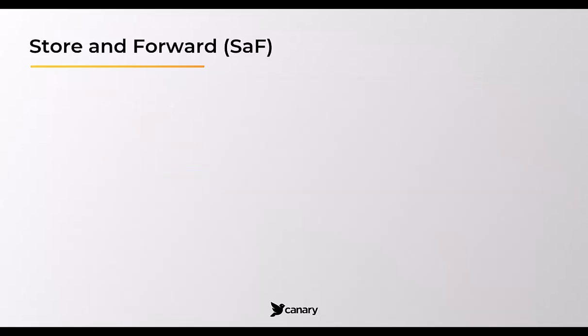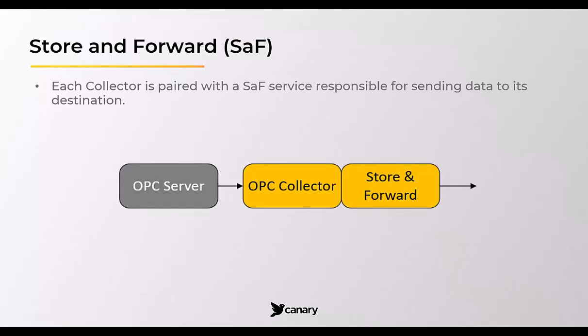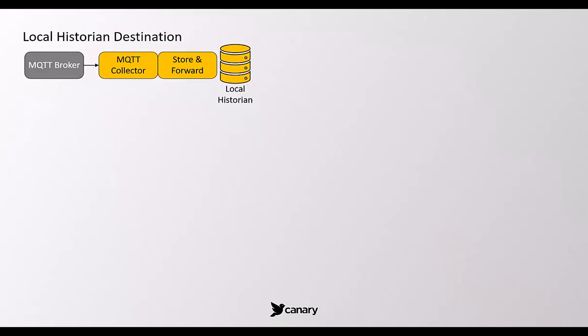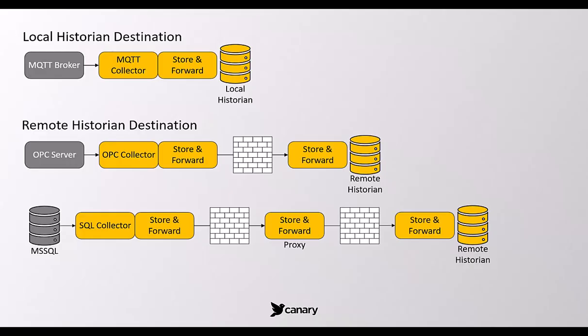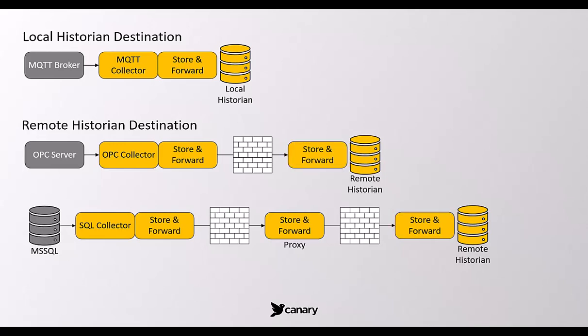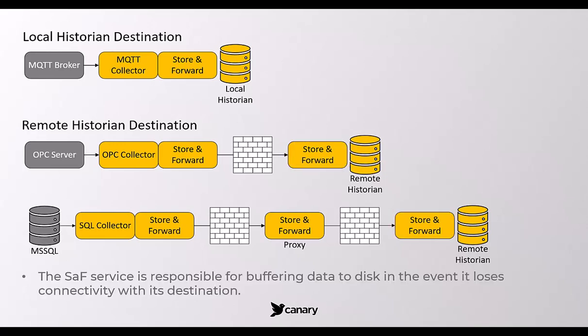Each collector is paired with a local store and forward service which is responsible for sending data to its destination. That destination could be local or remote depending on where the Historian is installed. In some cases, it could be sent to an intermediate proxy server before being forwarded on to the Historian machine. A store and forward service is also paired with the remote Historian on the receiving end. In the event the store and forward service loses connectivity with the destination, data is buffered to disk until it can re-establish the connection.